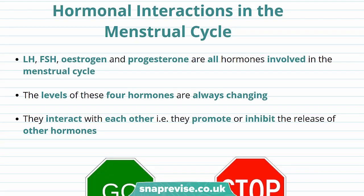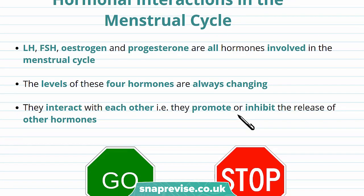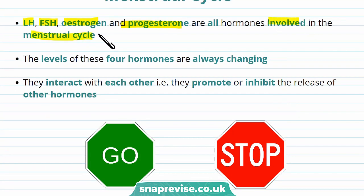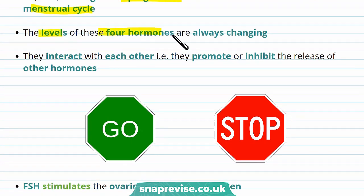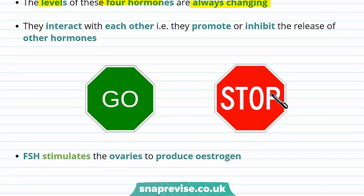Hormones are used to control the stages of the menstrual cycle, and these hormones can interact. Some of these hormones include LH or luteinizing hormone, FSH or follicle-stimulating hormone, estrogen and progesterone. The levels of these hormones are always changing, which brings about the different stages of the menstrual cycle. They can also interact by promoting or inhibiting the release of other hormones.